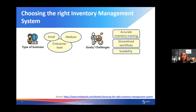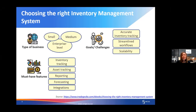The second consideration is to look at the goals and challenges you have. What are you trying to achieve? What challenges are you trying to solve? Make a list of all the operational challenges you are facing and the goals you want to achieve for your inventory management approach. This can include anything from accurate inventory tracking to lowering your inventory holding costs, streamlining your workflows, or scaling up with more capability.